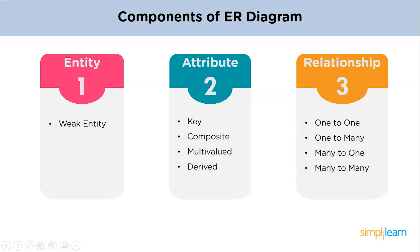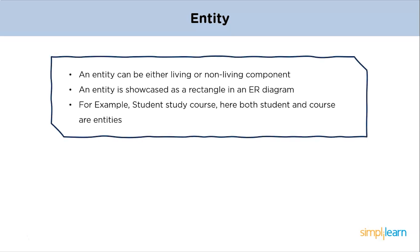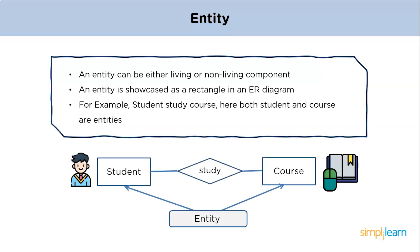Starting with entities — an entity can be either a living or a non-living component, and is showcased as a rectangle in an ER Diagram. In the example, both student and course are in rectangular shape and are called entities, and they represent the relationship 'study' in a diamond shape.